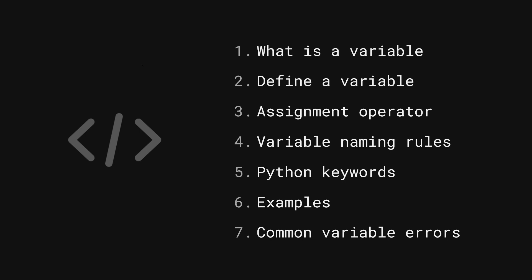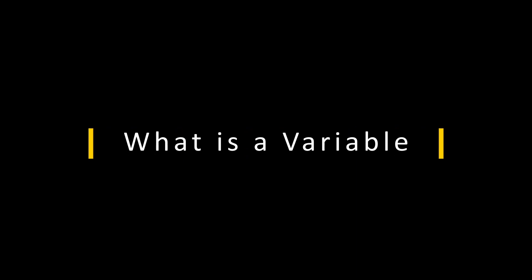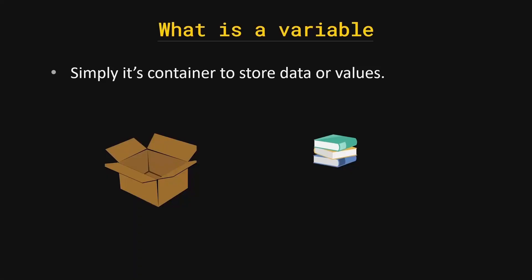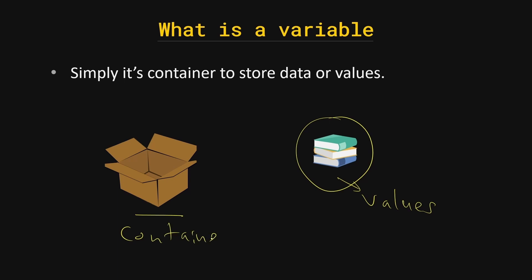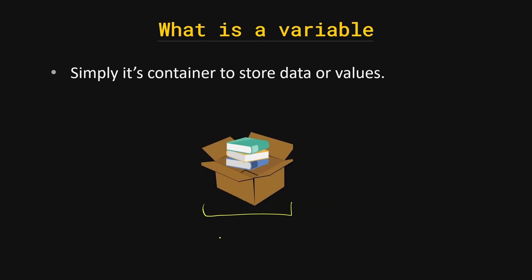In this video we are going to talk about what are variables in Python. Simply think of a variable as a container to store your data or values in your program. Let's say we have a couple of books and a box — you can think of these books as your values and this box as your container. You put these books into the box, and that container which stores values is called a variable.